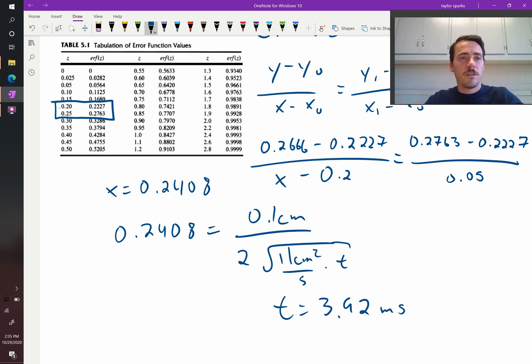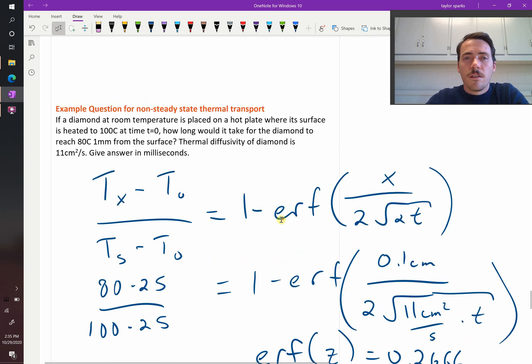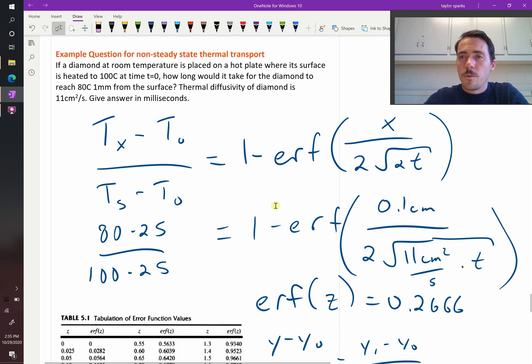So diamond is actually a really good conductor of heat. It did not take it long at all, milliseconds, for that to basically get heated to the same temperature of the surface all the way a millimeter into the sample. So that's an example of how you would do Fick's second law for non-steady state thermal transport in a material.